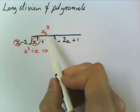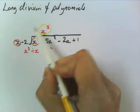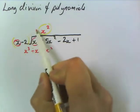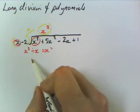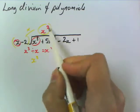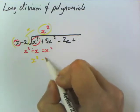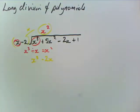Step two is then you multiply this x squared by the thing you're dividing by. So you're multiplying these two together. So x squared times x, and you write this here, x cubed. x squared times minus 2 is minus 2x squared.